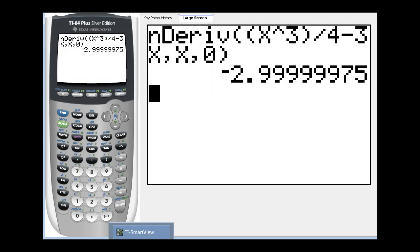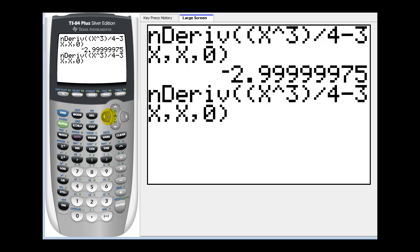Instead of typing all this in again, what we can do is press second enter, and then just scroll over here and change the 0 to a 2. Press enter. Again, the calculator is having a little bit of difficulty here.